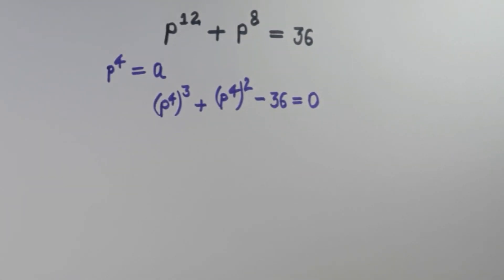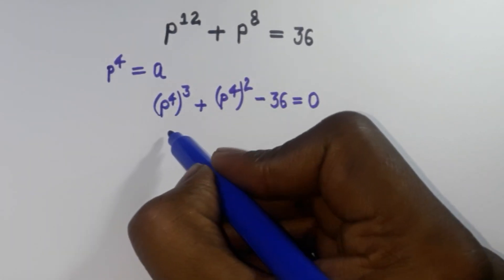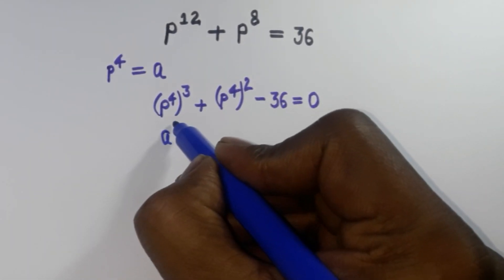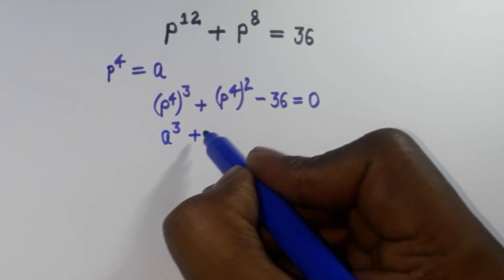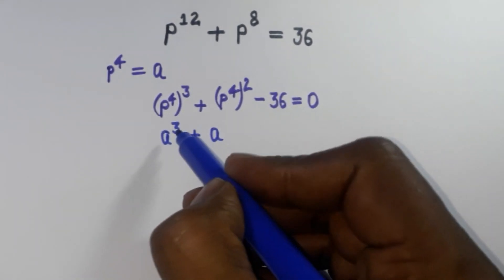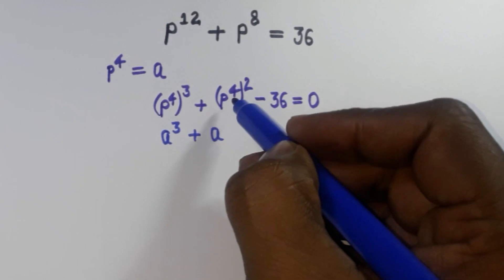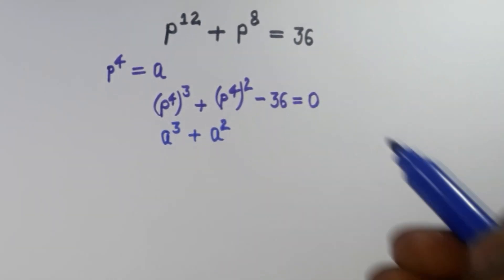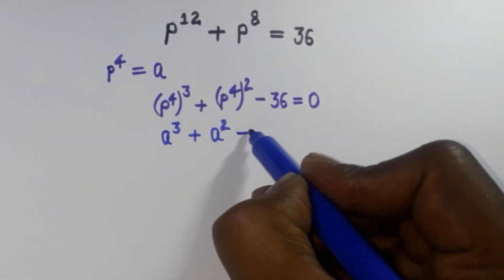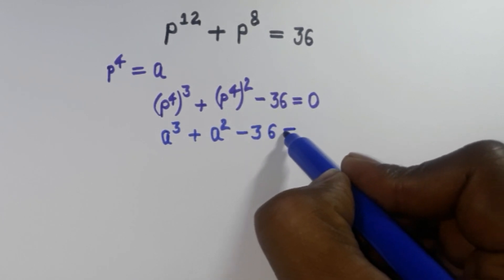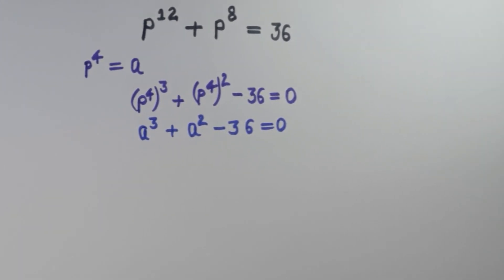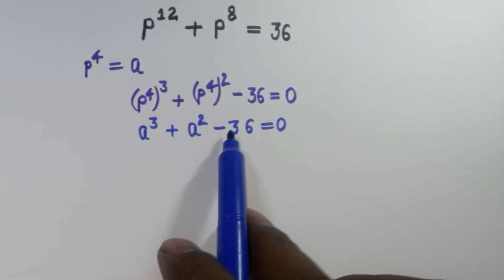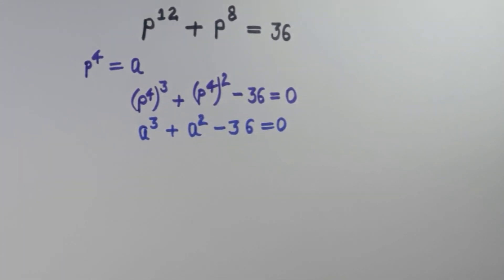Next step, we can write this value as a³ plus a² minus 36 equal to 0. So we have a³ plus a² minus 36 equal to 0.